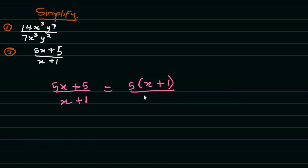All over x plus 1. X plus 1 divided by x plus 1 cancels out, which means our final answer is 5.